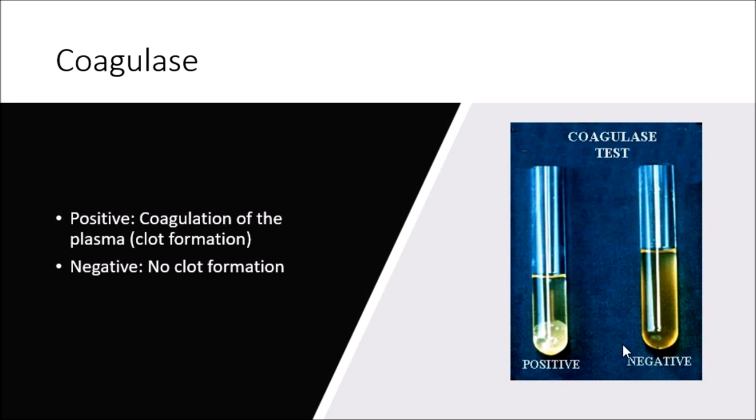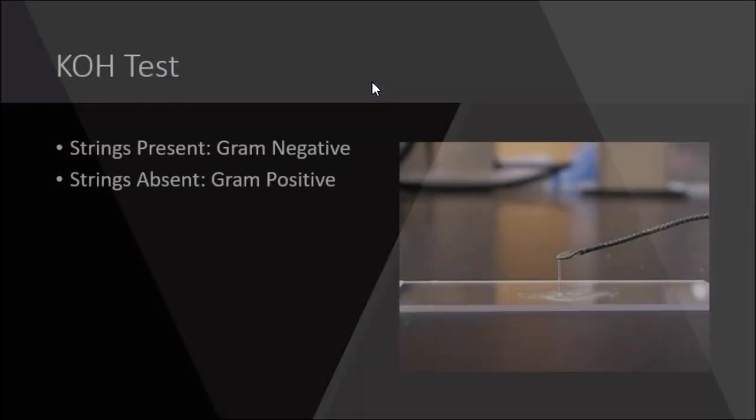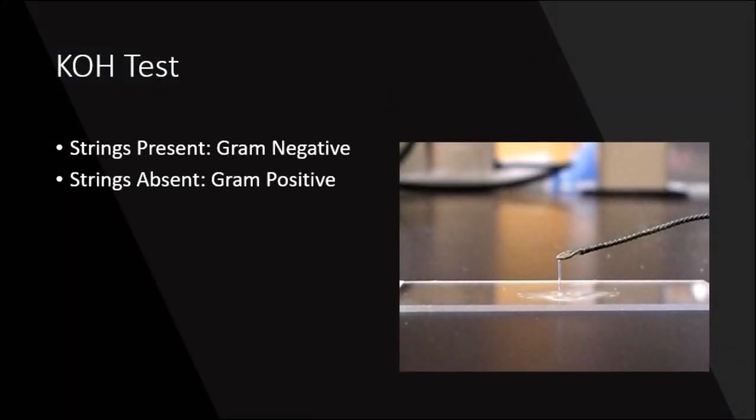The next test is the KOH test. The purpose of this test is to confirm gram stains based on whether 3% KOH can lyse bacterial cell walls and release DNA. The procedure: you would use a loop to transfer one, two, maybe three colonies from a TSA plate to one end of a microscope slide, like right here is what they have.